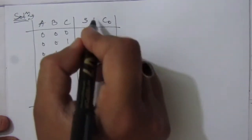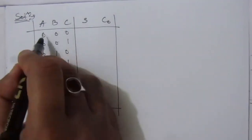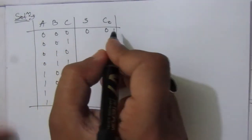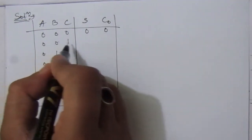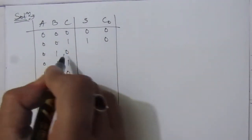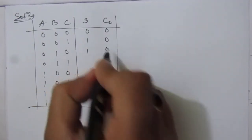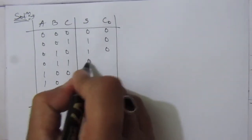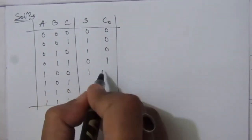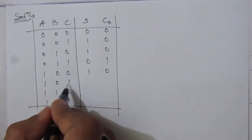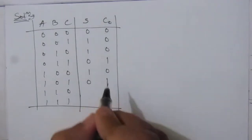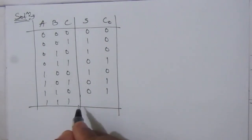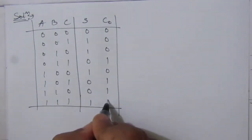Now let us find the sum and carry outputs by adding the three bits. 0+0+0: sum=0, carry=0. 0+0+1: sum=1, carry=0. 0+1+1=2 (binary 10): sum=0, carry=1. 1+0+1: sum=0, carry=1. 1+1+0: sum=0, carry=1. 1+1+1=3 (binary 11): sum=1, carry=1.